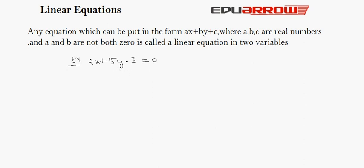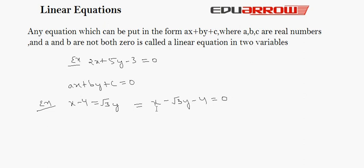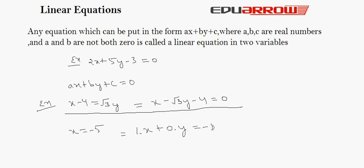So it is called a linear equation in two variables. For example, if we have to write x minus 4 is equal to root 3y in the form ax plus by plus c is equal to 0, we write it as x minus root 3y minus 4 is equal to 0, where a is 1, b is minus root 3, and c is minus 4. Similarly, x is equal to minus 5 can be written in two-variable form as 1 times x plus 0 times y plus 5 is equal to 0.